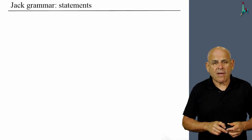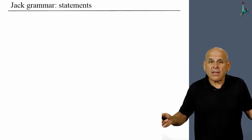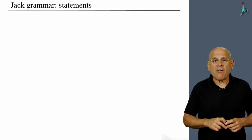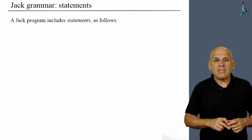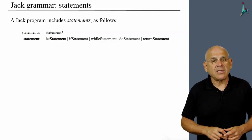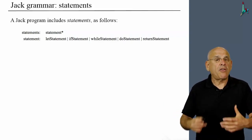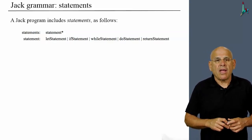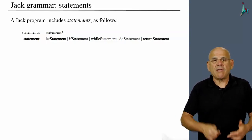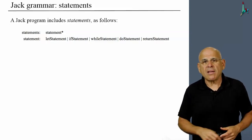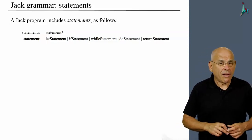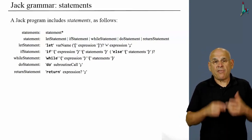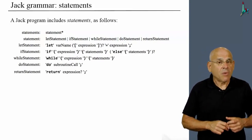Okay, what else do we have? Well, in Jack we have statements, right? And this is something that we actually dealt with before in our examples. But basically, we have statements which are zero or more occurrences of statement in singular. And statement is either a let, an if, a while, a do, or a return.